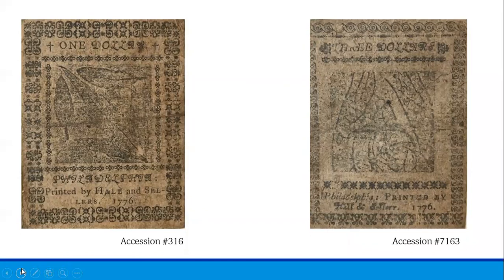At first, continental currency circulated fairly on par with the Spanish dollar, but that changed quickly and continentals began to depreciate badly, giving rise to the famous phrase, 'it's not worth a continental.' A primary problem was that monetary policy was not coordinated between Congress and the colonies. While Congress was authorizing the printing of continentals, the states were simultaneously issuing their own bills of credit and debt certificates to cover war expenses. The sheer number of bills issued soon led to massive depreciation. At one point during the war, General Washington is said to have remarked, 'a wagon load of currency cannot buy a wagon load of supplies.'